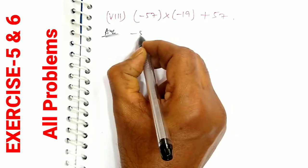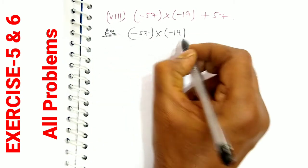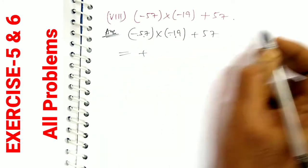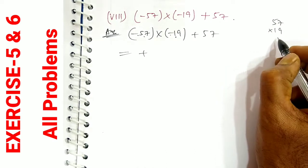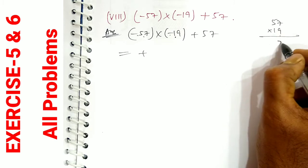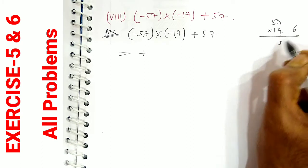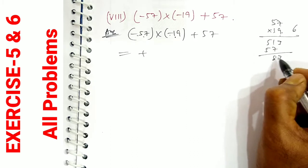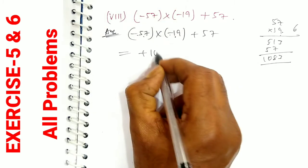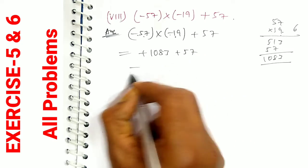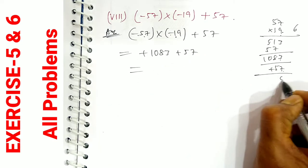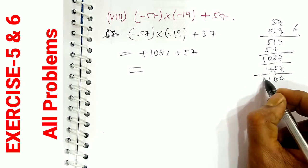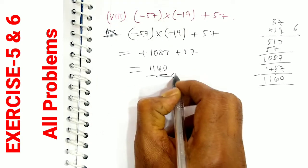Eighth bit: minus 57 into minus 19 plus 57. Minus into minus is plus: 57 into 19. Multiplying 57 into 19: 9 times 7 is 63, carry 6; 9 times 5 is 45 plus 6 is 51; 1 times 7 is 7; 1 times 5 is 5. So 1083 plus 57. Adding: 7 plus 3 is 10, carry 1; 8 plus 5 plus 1 is 14, carry 1; giving 1140. The answer is 1140.